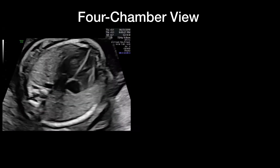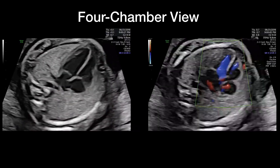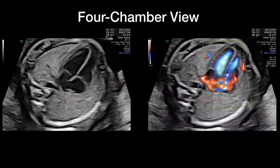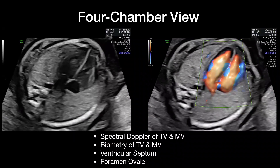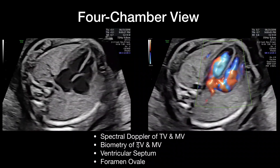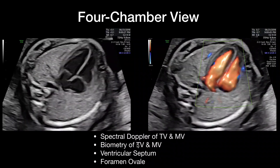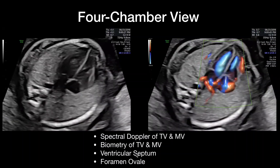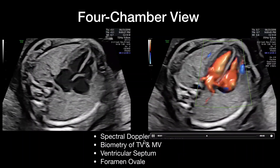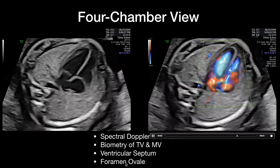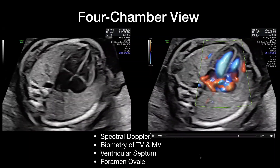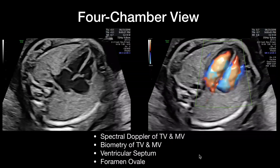At the level of the four-chamber view, you need: the four-chamber view in grayscale, the four-chamber view in color, spectral Doppler of the tricuspid and mitral valve, biometry of the tricuspid and mitral valve, looking at the ventricular septum — probably in a more perpendicular approach — and looking at the flow across the foramen ovale.